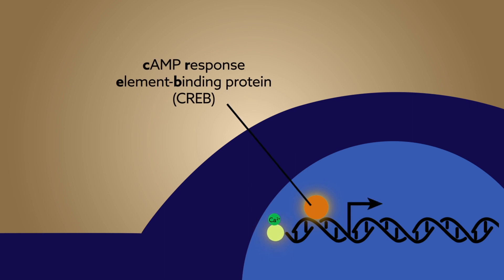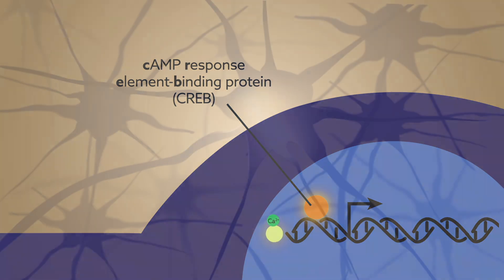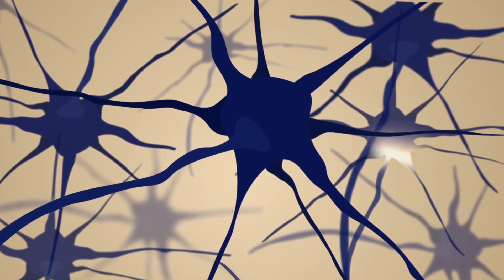CREB is known to be important in mediating brain plasticity, but it had never been studied in concert with neuronal activity, certainly not at the level of a single cell.